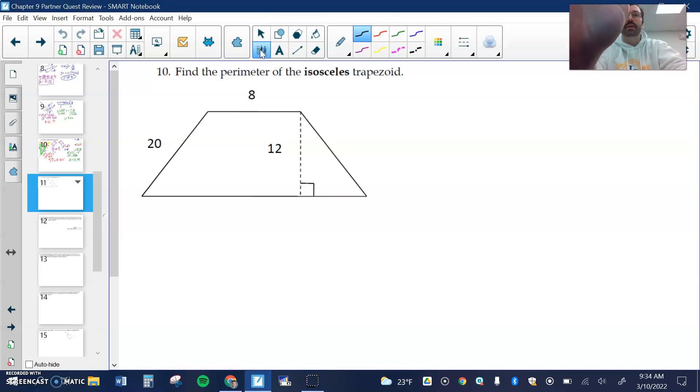Number 10 says find the perimeter. Perimeter is the distance all the way around the shape, not including the inside, of this isosceles trapezoid. Well if it's isosceles, I know if this is 20, then that's 20. I also know I can drop down a height here.